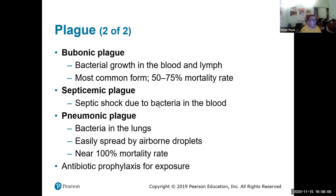That can lead to bubonic plague — bacterial growth in the lymph nodes. This is the most common type of plague, with a 50–75% mortality rate. The septicemic plague has around 80–90% mortality. Pneumonic plague is where you are almost certainly dead — it kills very quickly, like within a day. Antibiotic prophylaxis is used for exposure, but even with antibiotics, your chance of dying is roughly one in four.